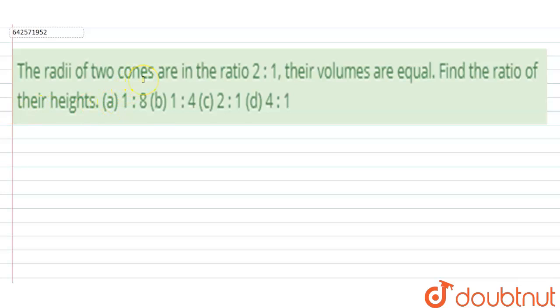Hello everyone. Let's start this problem. The radii of two cones are in the ratio 2:1, and their volumes are equal. Find the ratio of their heights: (a) 1:8, (b) 1:4, (c) 2:1, or (d) 4:1.